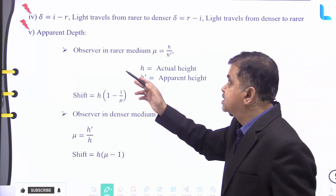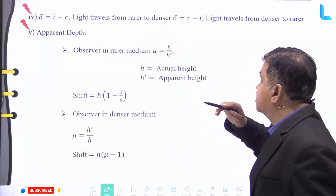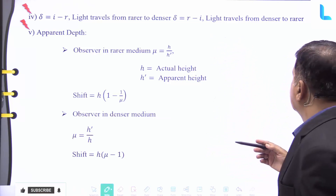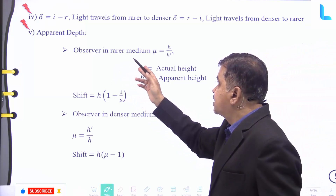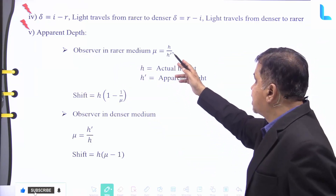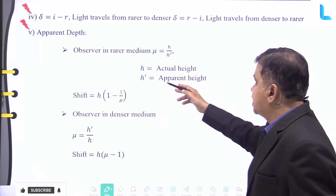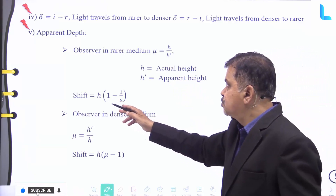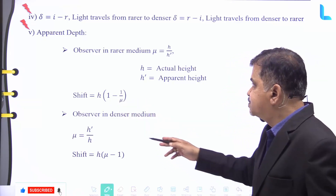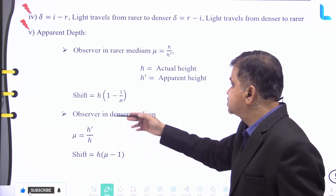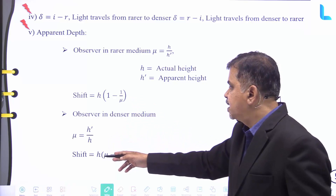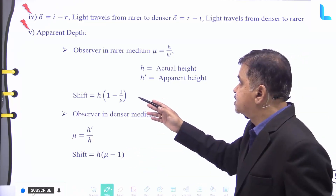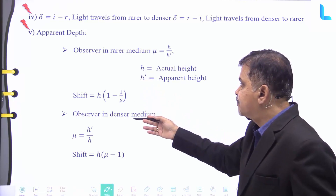The deviation δ = I − R for light travelling from a rarer to denser medium, and δ = R − I for light travelling from denser to rarer medium. For apparent depth with an observer in the rarer medium, μ = h/h', where h is actual depth and h' is apparent depth, and the shift is h(1 − 1/μ). For an observer in the denser medium, μ = h'/h and the shift is h(μ − 1).